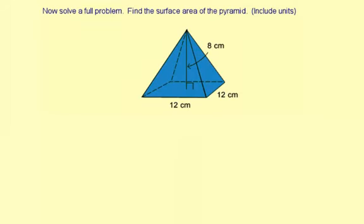Find the surface area of the pyramid. So the surface area of the pyramid is the area of the base and then plus the area of all the lateral faces which are triangles.